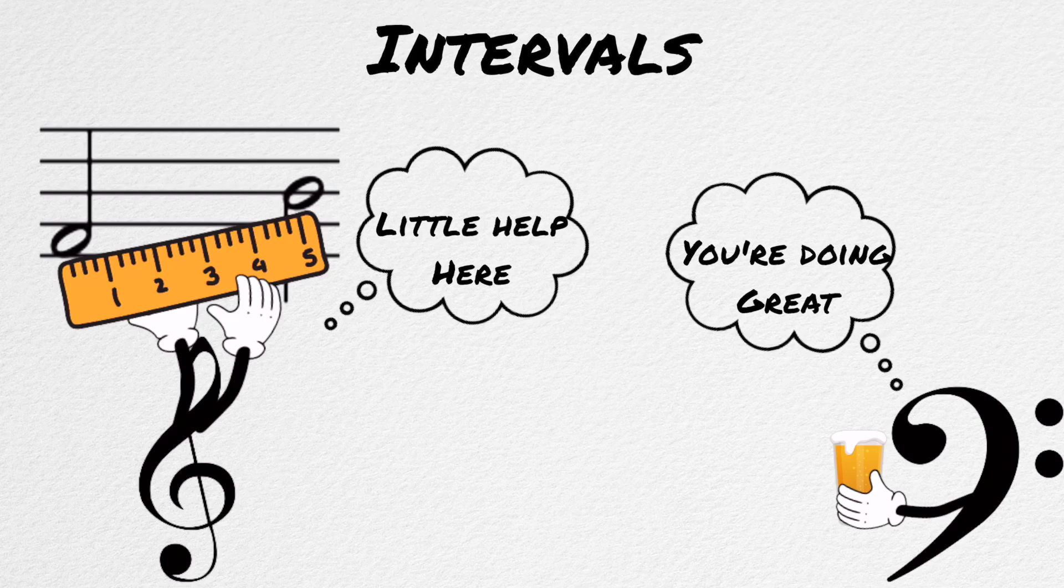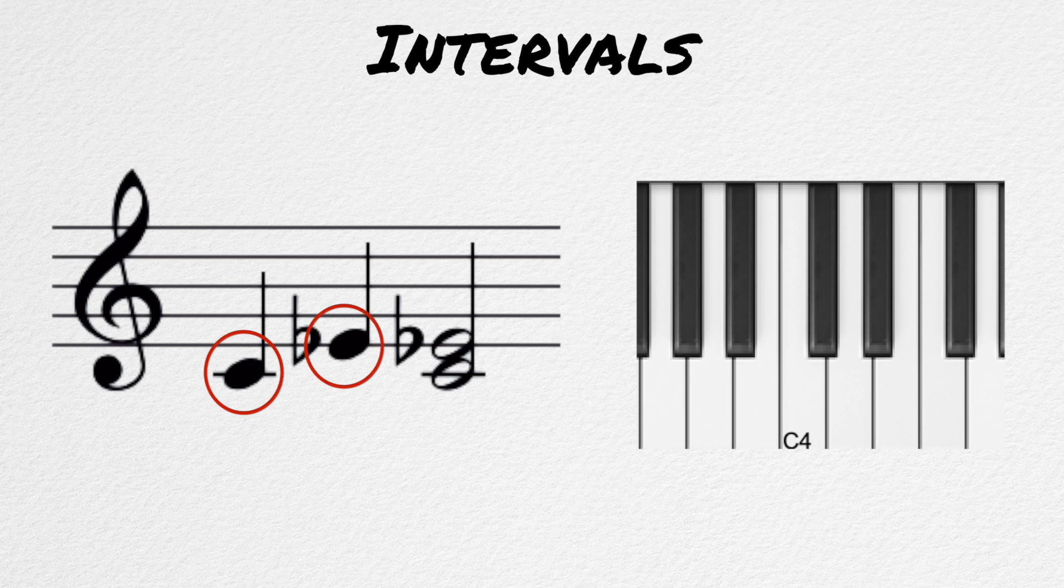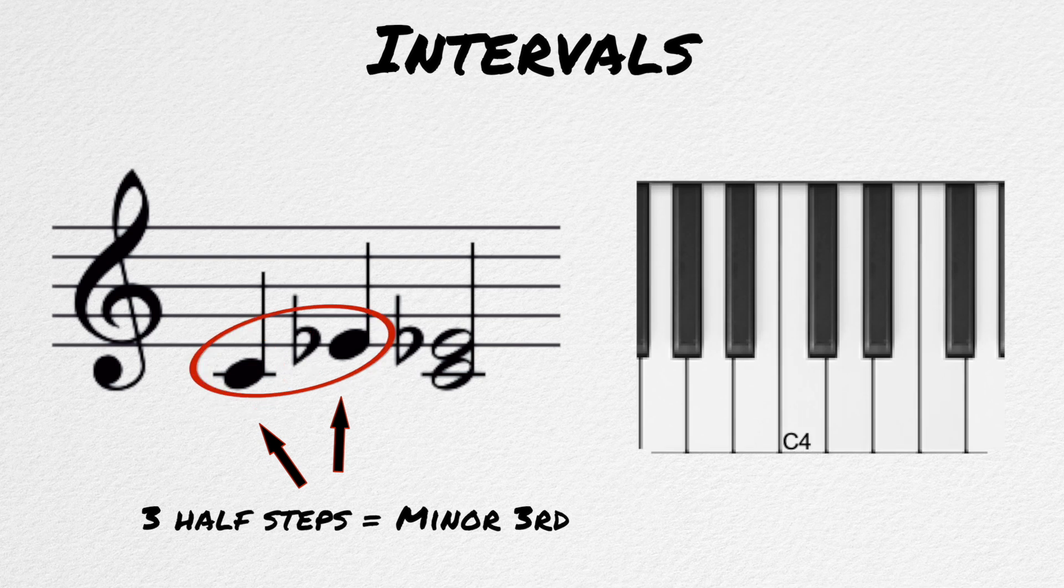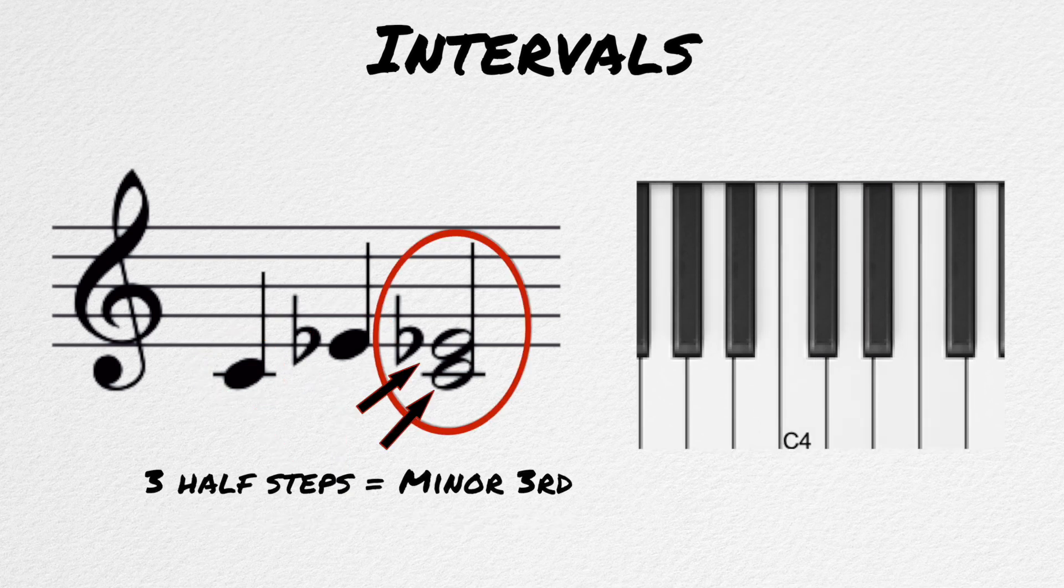Intervals are the way in which musical distance is measured, and half-steps are the unit of measurement. The number of half-steps between one note and the next determine the interval between those notes. And this holds true whether these notes are played melodically, one after another, or harmonically, played together.